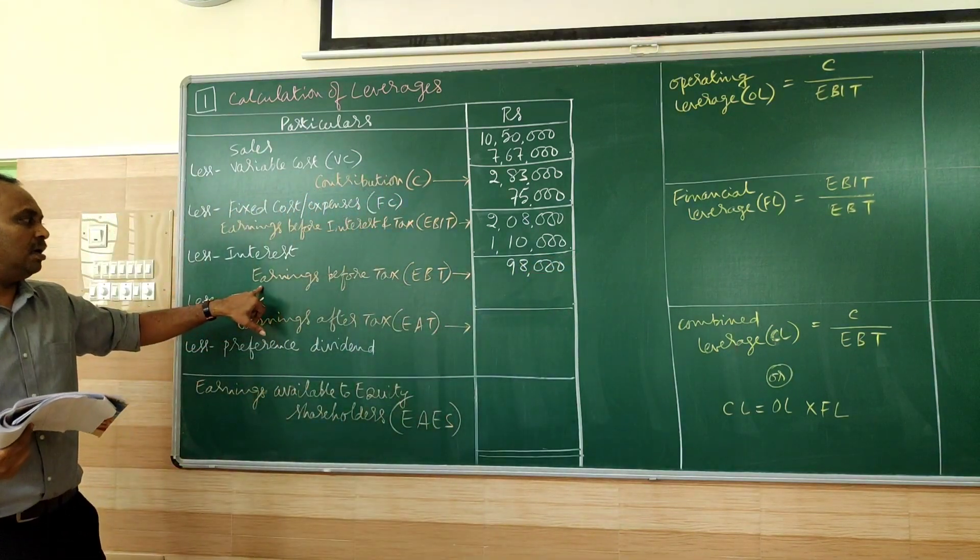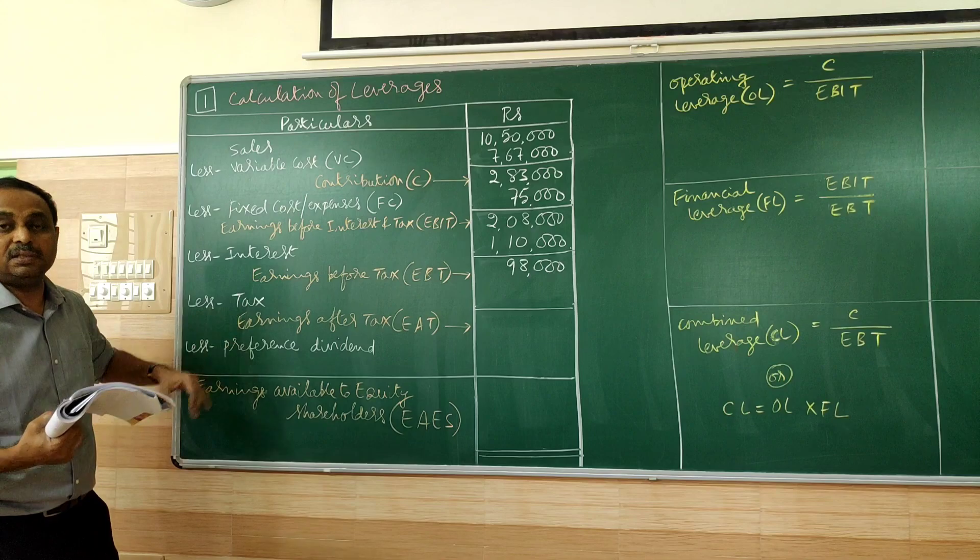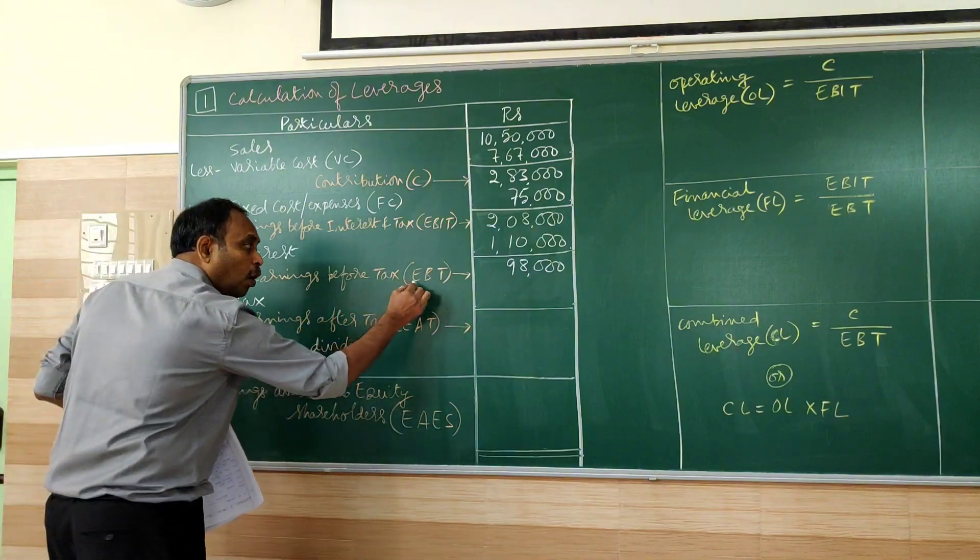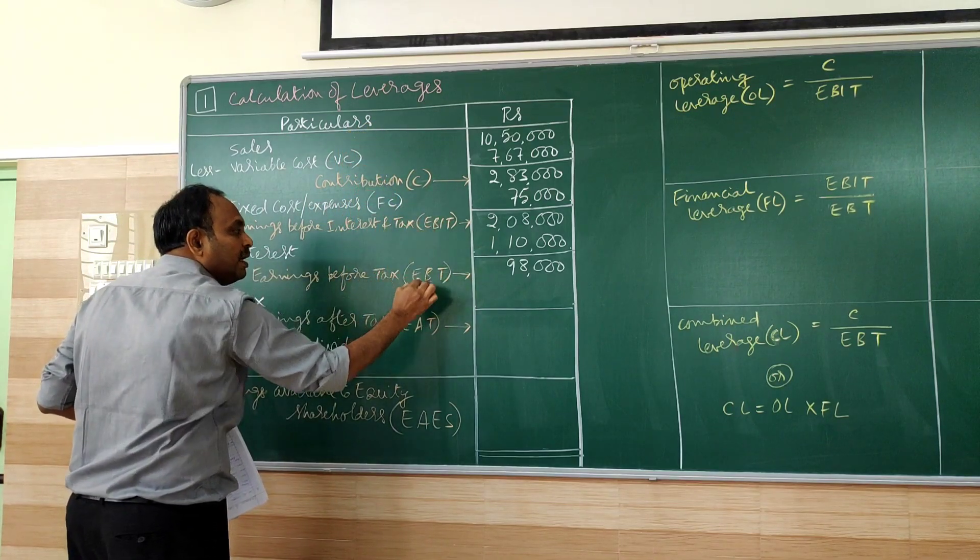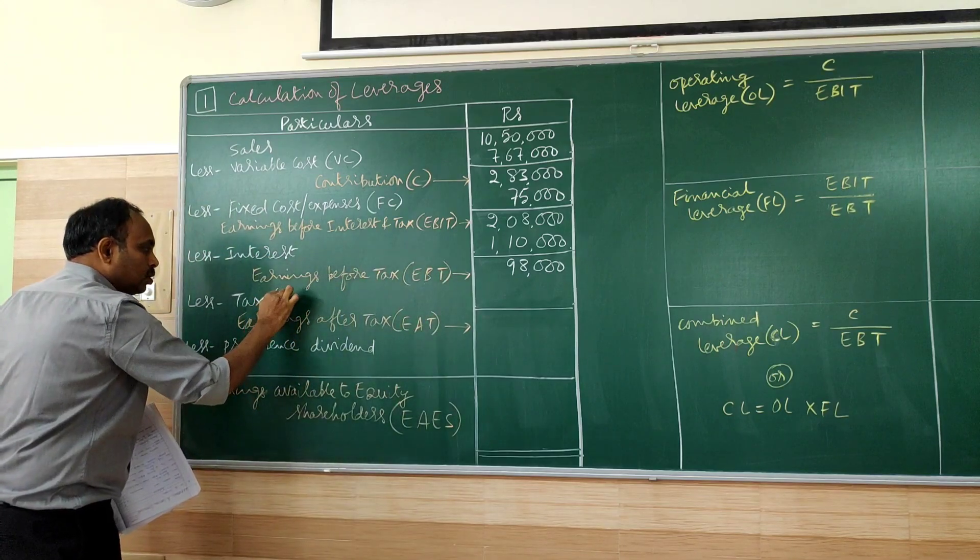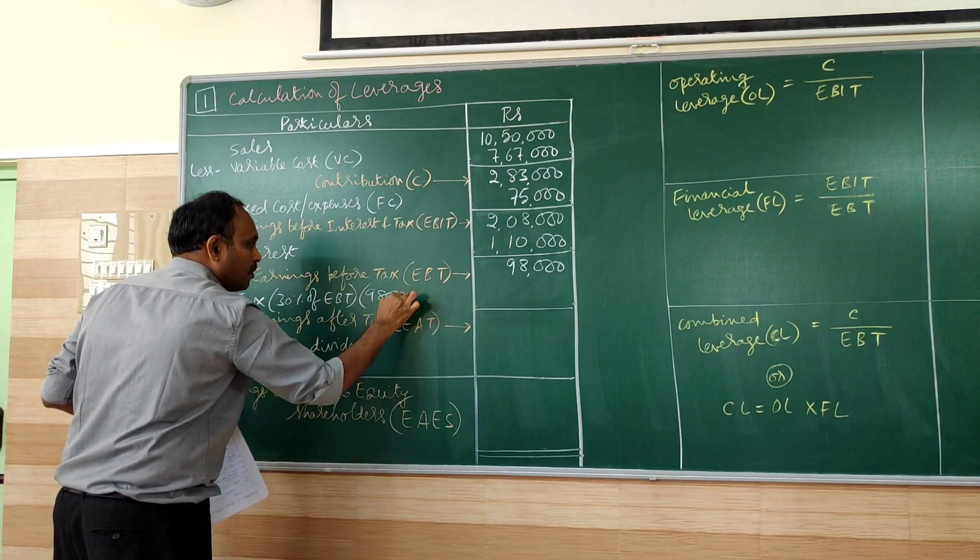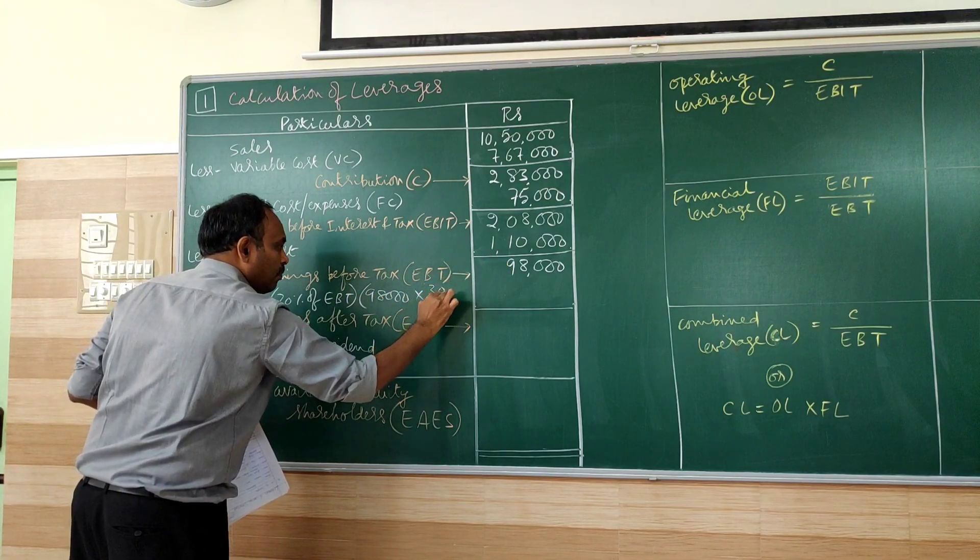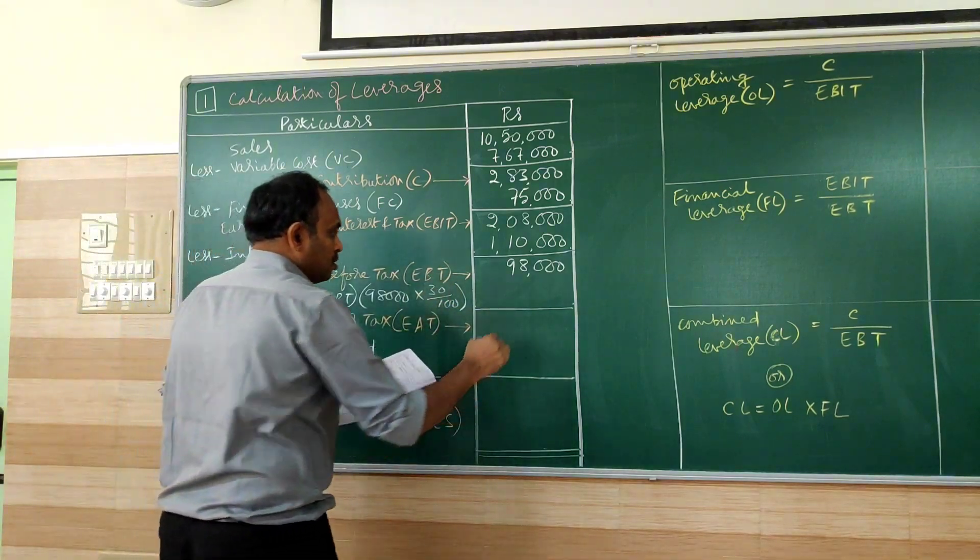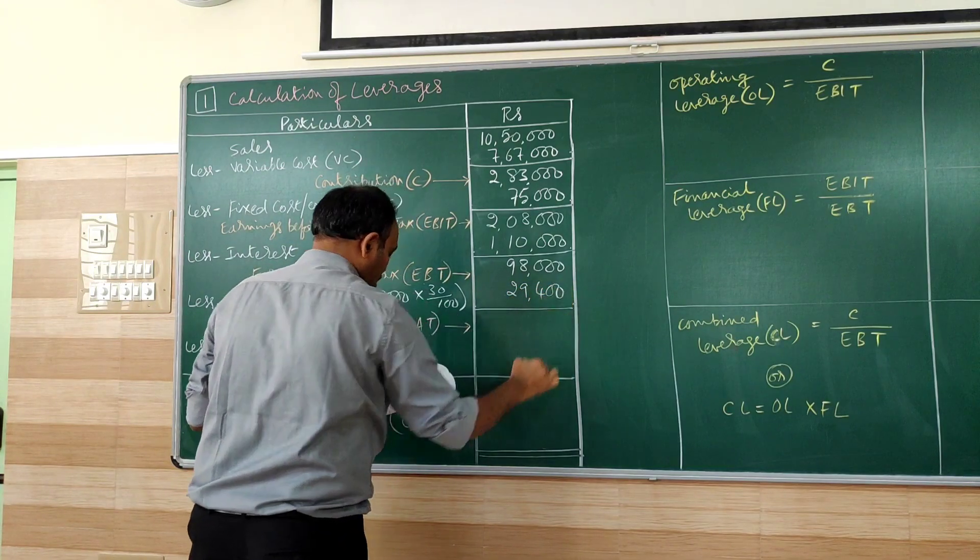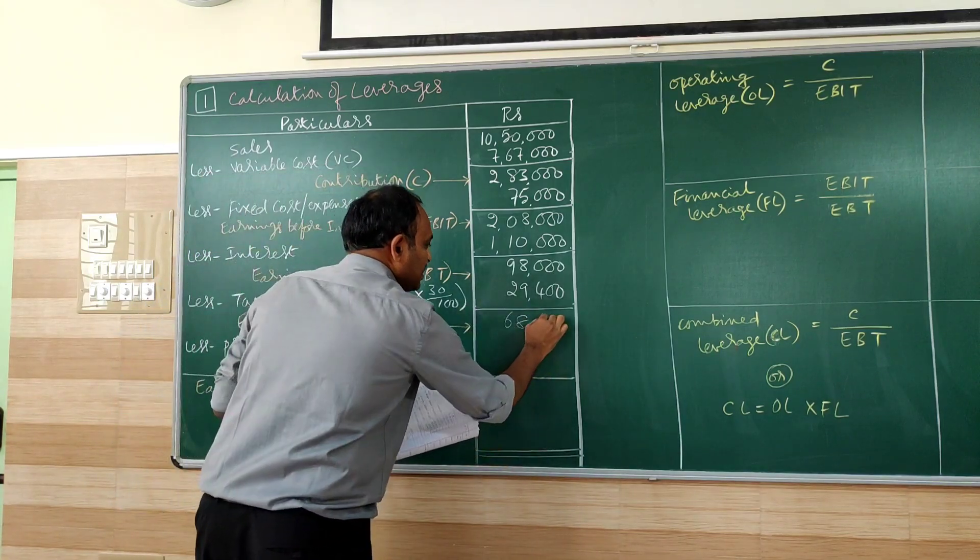So after deducting interest, this is called earnings before tax. So the result of EBT is 98,000. In the problem we have 30% tax. So 30% tax will be calculated always on EBT, not on the sales, not on the contribution, not on EBIT. It is always on EBT. So 30% of EBT, 98,000. And 30% of that I have calculated, so 29,400.